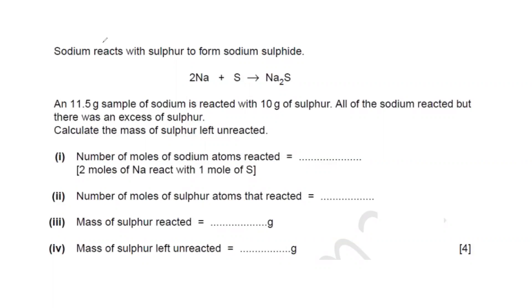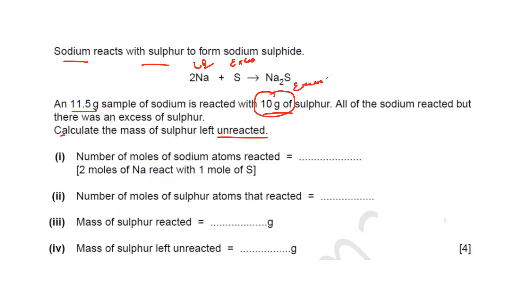Another question on limiting and excess reagents: sodium reacted with sulphur to form sodium sulphide. An 11.5 gram sample of sodium is reacted with 10 grams of sulphur. The question states all the sodium reacted but there was excess sulphur — meaning sulphur is the excess reagent and sodium is the limiting reagent. We need to calculate the mass of sulphur left unreacted.